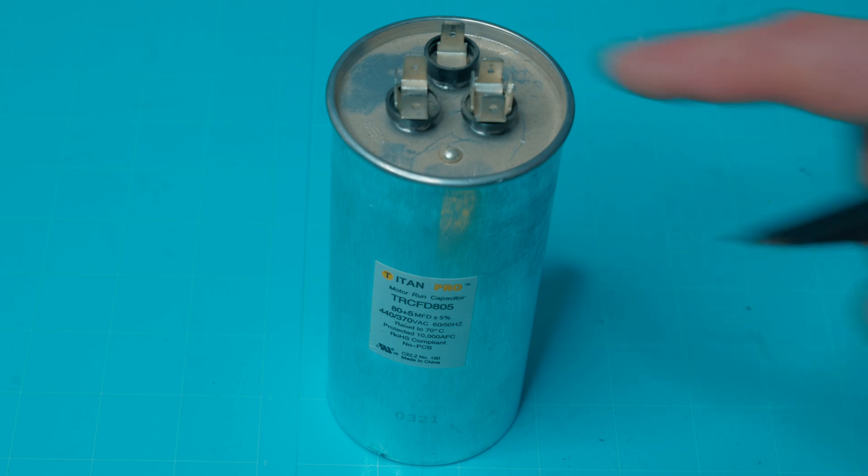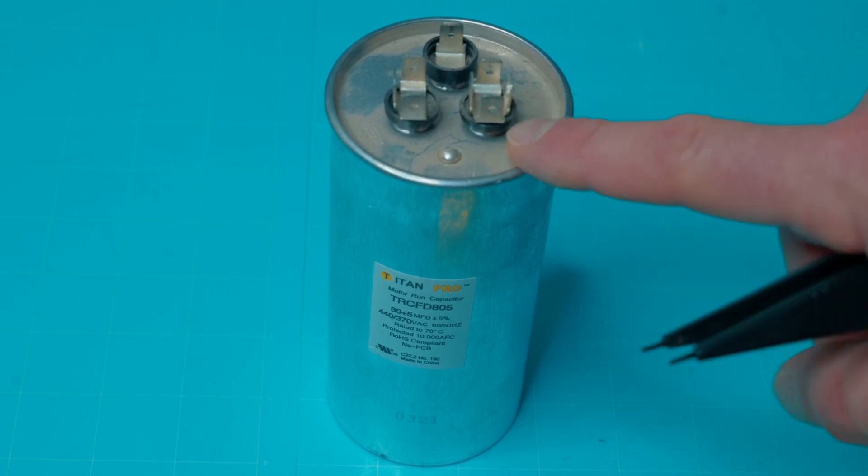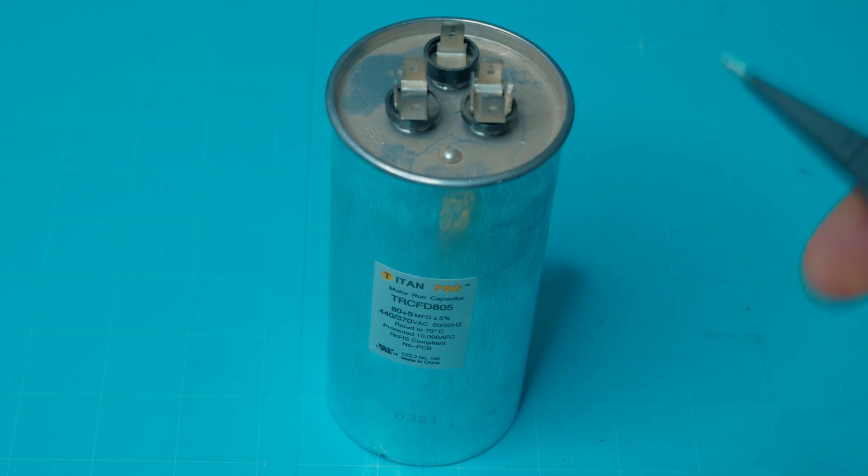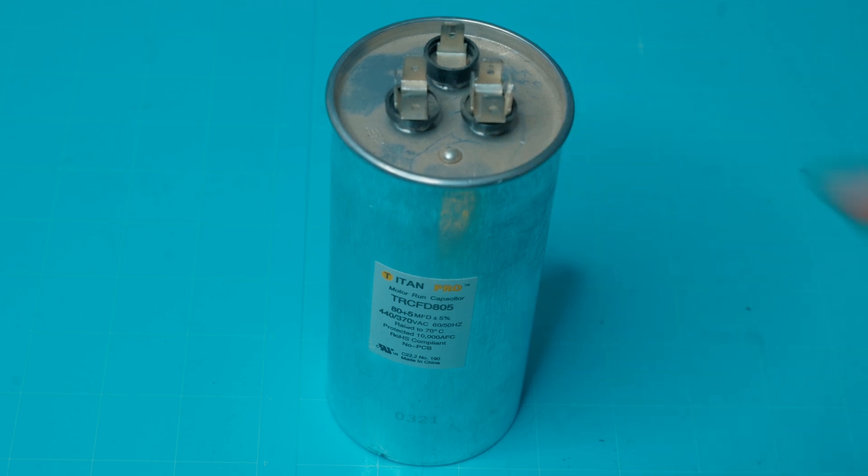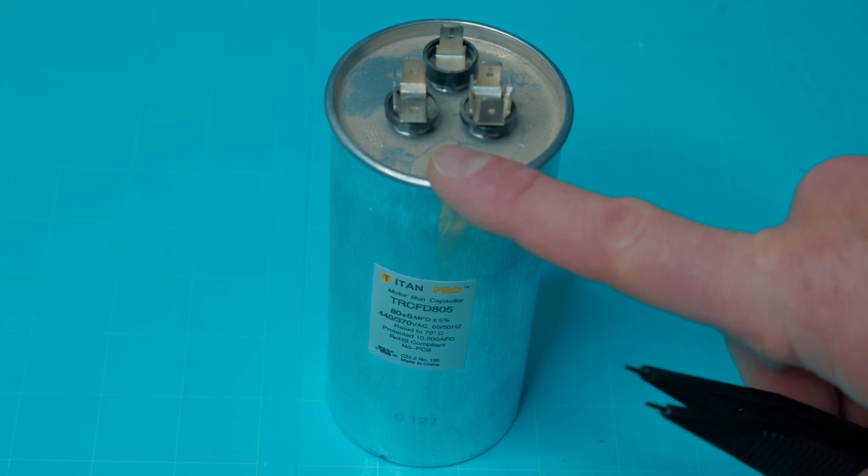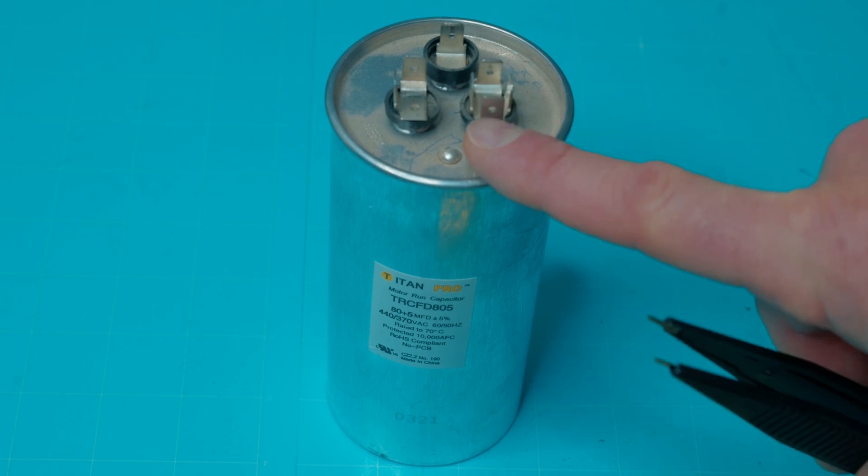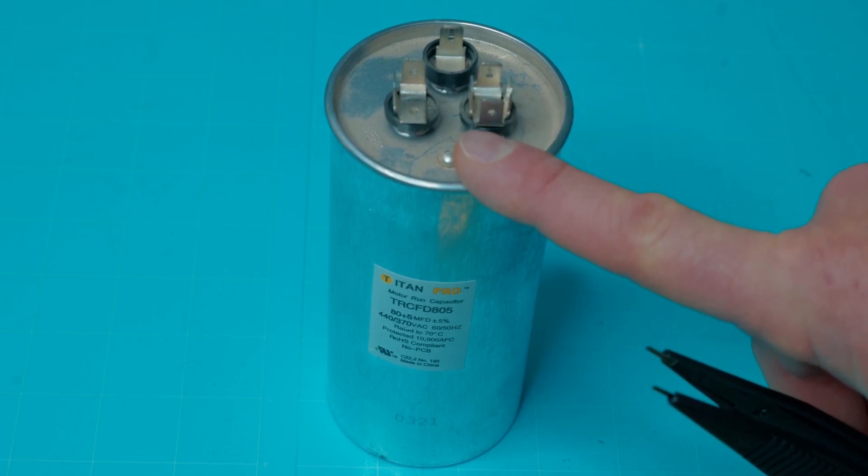First up is my Titan Pro. This is a RunStar AC capacitor. These are around 370 volts AC, and both of these discharge tools will handle discharging this capacitor. This one's already discharged, and if you're working on a live circuit, make sure you discharge this before removing it from the circuit.